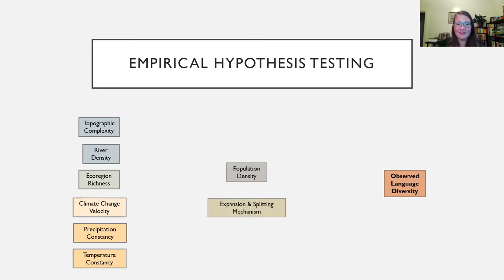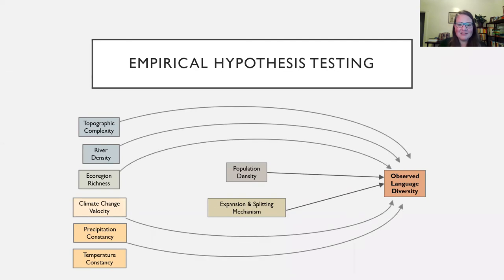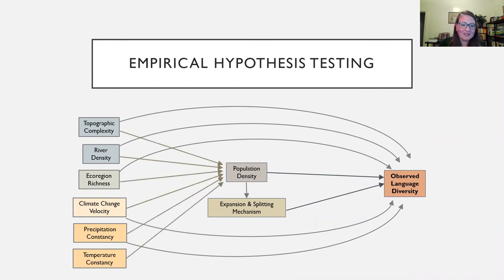We know population density matters to language diversity, so we included that through a measure of likely carrying capacity from another paper. We also have an expansion and splitting mechanism — a mechanistic model that predicts where language splits are going to happen based on carrying capacity. Each of these things can have individual direct impacts on language diversity, but they can also all be mediated by population density and that splitting mechanism responsible for languages breaking apart. That's what our path model looks like.